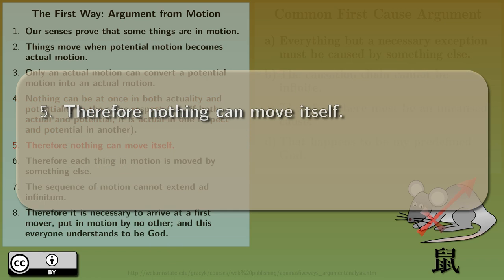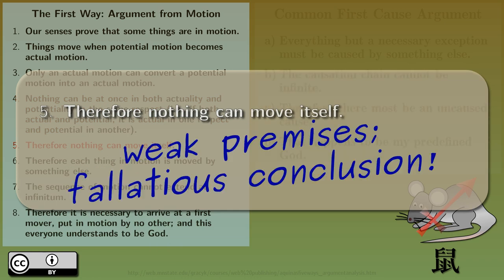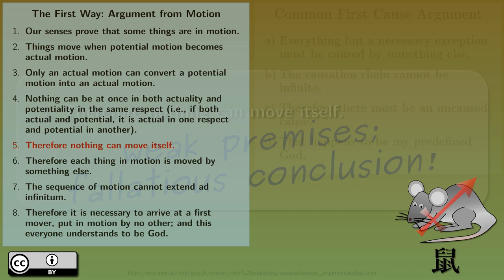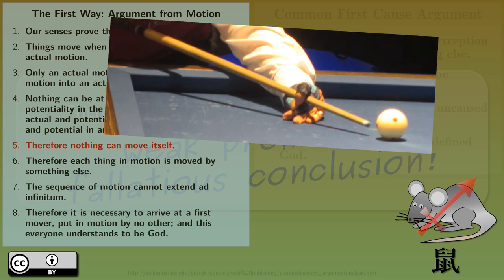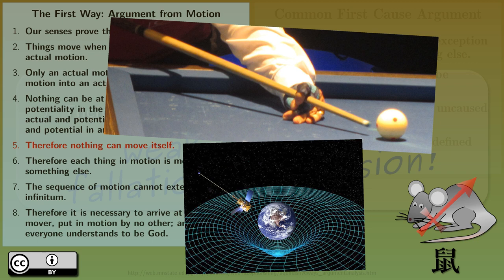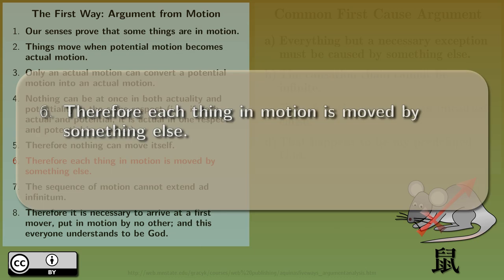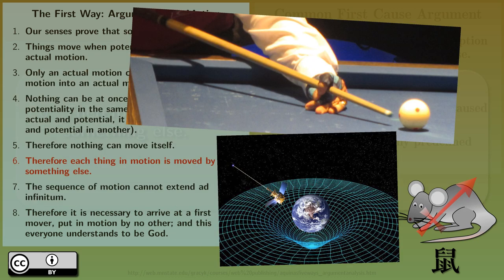Therefore, nothing can move itself. Given that the premises are weak, then this conclusion is fallacious, but I can probably fix this at this point. The only way to change the total momentum of a body is by applying an external force. Therefore, each thing in motion is moved by something else. Except for a force not necessarily being the momentum of something else.